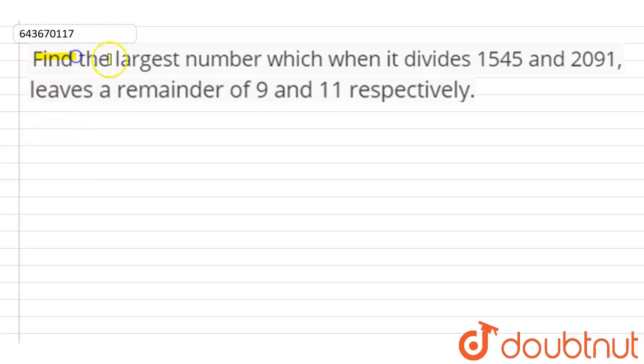The question says: Find the largest number which when it divides 1545 and 2091, leaves a remainder of 9 and 11 respectively.